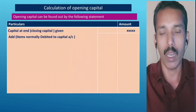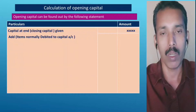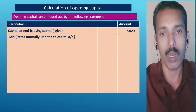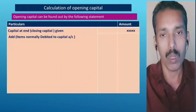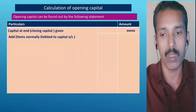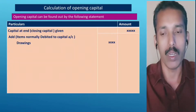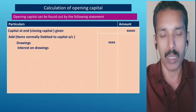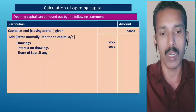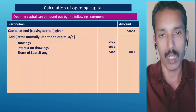Items normally debited to the capital account are: drawings, interest on drawings, and share of loss. These debit-side items need to be added back when calculating the opening capital.